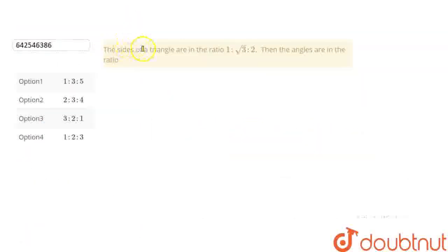We are given that the sides of a triangle are in the ratio 1 : √3 : 2. Then the angles are in the ratio, and the options given are: 1:3:5, 2:3:4, 3:2:1, and option 4 is 1:2:3.